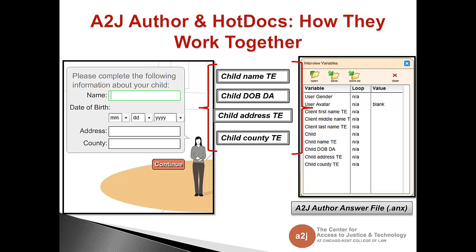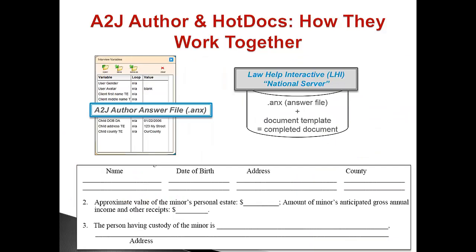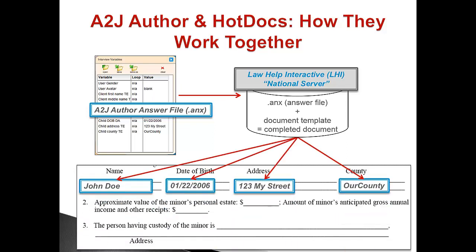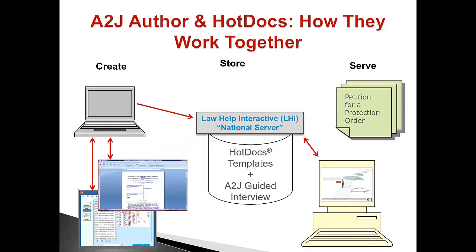Here you can see how A2J Author gathers the information from the end user in questions, stores that data in variables, which are then housed in the A2J answer file, that .anx file. That answer file is then transmitted to LHI's national server which reads the data in the variables and places that information into the appropriate spots on the Hot Docs document. So, to review: you create the Hot Docs template and then the A2J Guided Interview. They are both uploaded to the LHI server. The end user then accesses them, enters their information and answers questions in the A2J Guided Interview. The server puts those answers into the Hot Docs template and the end user is delivered a document.